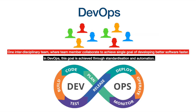DevOps is the process of automating and streamlining different phases of software development. There is only one interdisciplinary team whose members collaborate to achieve the same goal of developing better software faster. With the help of standardizing and automating different phases of software development, one can reduce the development, delivery, and deployment time of software.